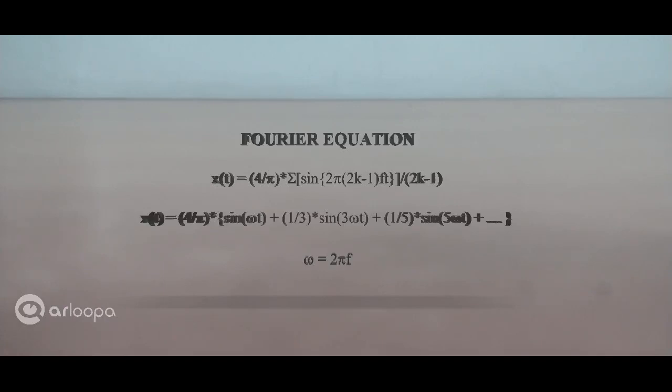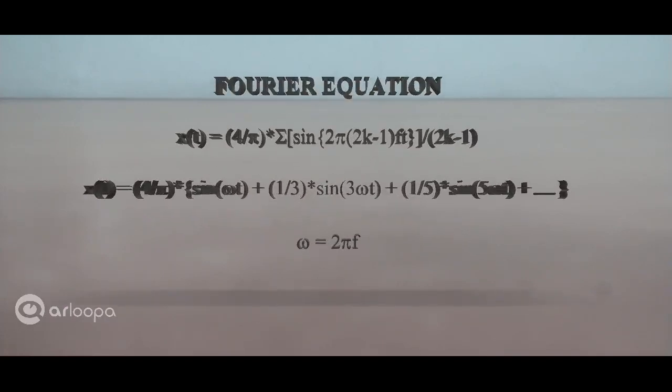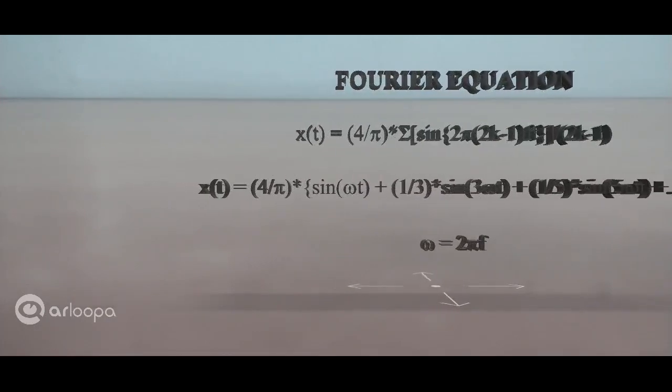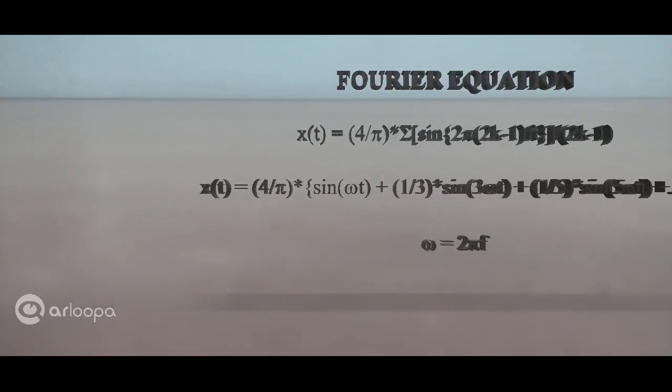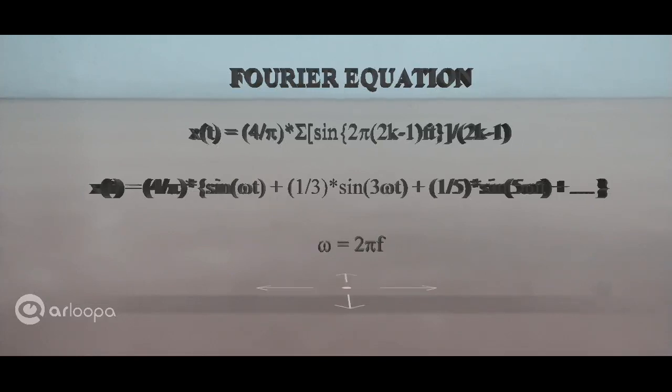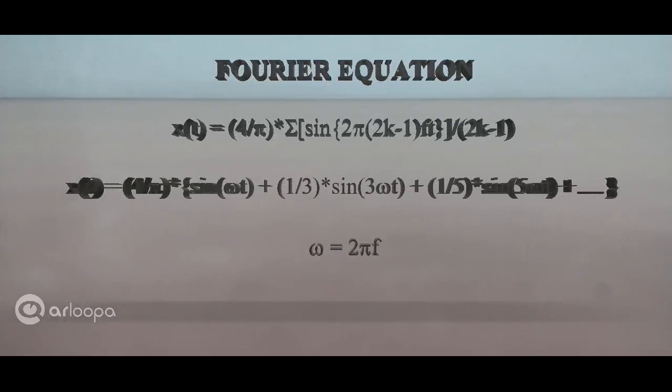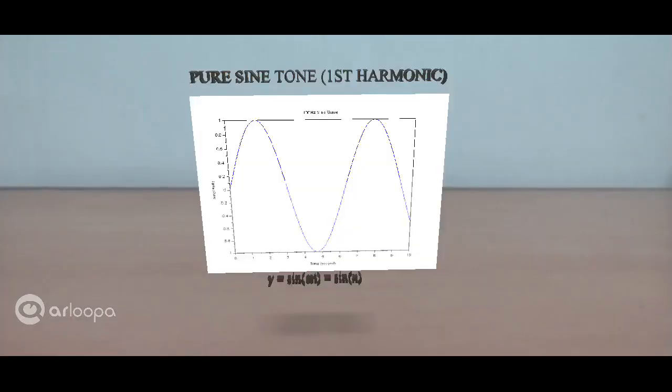Alright, this is a Fourier expression. And as you can observe here, it represents the sum of all the frequencies right from the fundamentals. So sine of omega t, that is fundamental frequency. And the next one is the odd harmonic, which is the third harmonic, one third times sine of three omega t. The next is the fifth harmonic and so on. It keeps continuing. And omega is the angular frequency, which is 2πf. F is the sound frequency or the frequency.